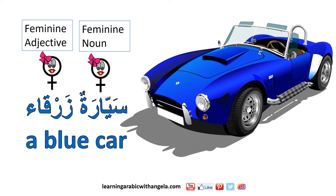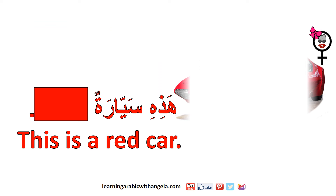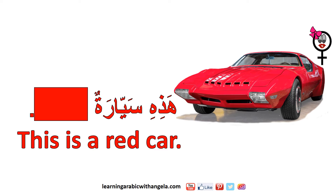Furthermore, remember that the noun comes first in Arabic, followed by the adjective, as opposed to English. For example, a blue car is said as سيارة زرقاء. Now test your knowledge — can you complete the sentence?